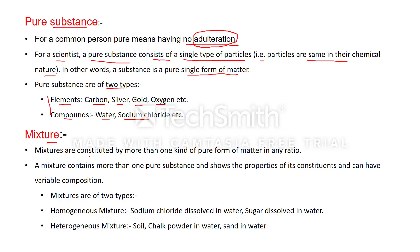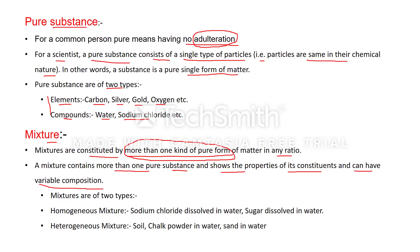What are mixtures? Mixtures are constituted by more than one kind of pure form of matter in any ratio. More than one kind of pure form means pure substance. As we discussed, pure substances are of two types: elements and compounds. If we mix more than one element, or more than one compound, or one element with another compound, we will get a mixture. A mixture contains more than one pure substance, shows the properties of its constituents, and can have variable composition. The properties of the constituents are retained in a mixture — they will not be lost.